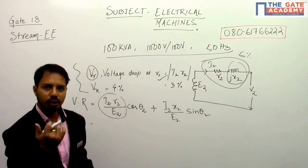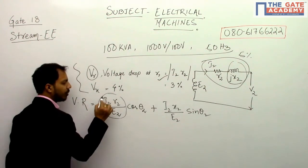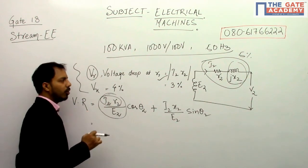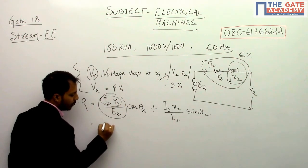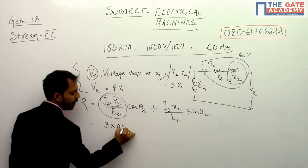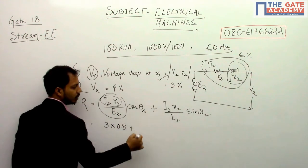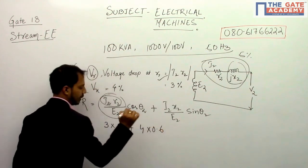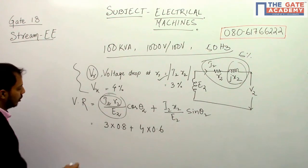This is a percentage value. We know this is 3%, cos θ we know to be 0.8. This also we know is 4 into 0.6.